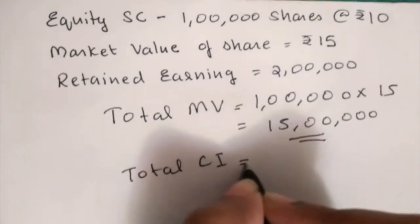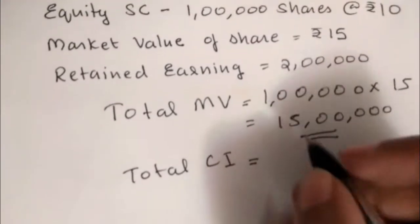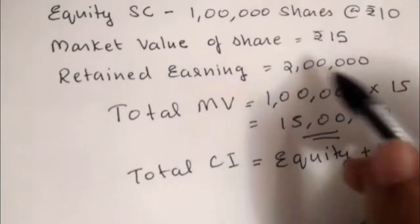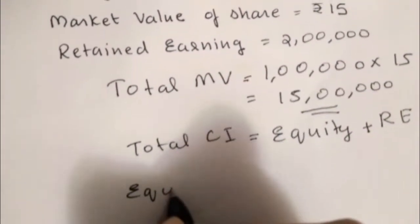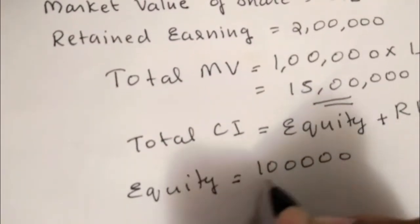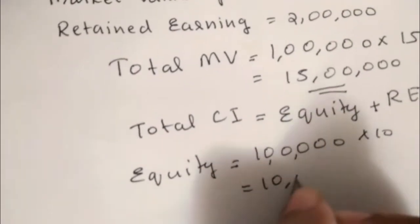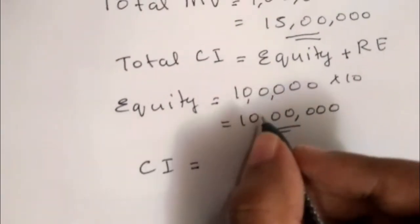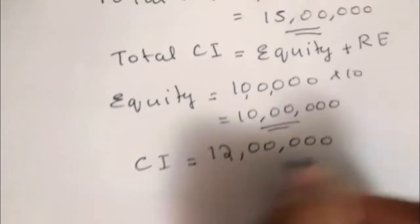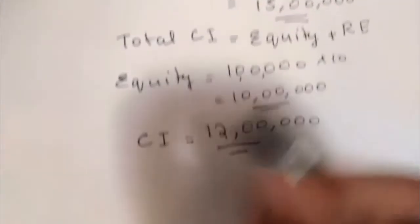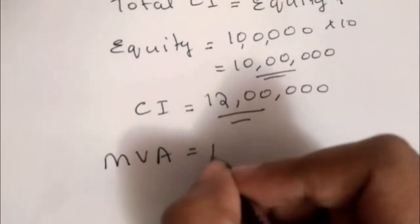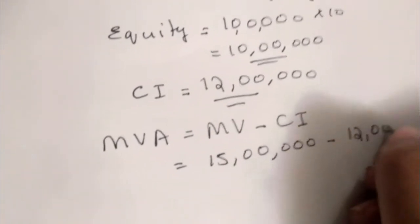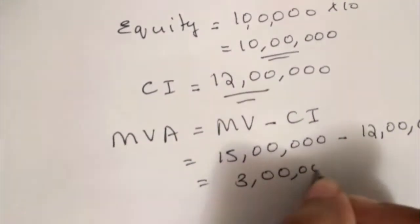Now we calculate the total capital invested. Capital invested equals equity share capital plus retained earnings. Retained earnings are given as ₹2 lakh. Equity share capital equals 1 lakh shares multiplied by ₹10, which gives ₹10 lakh. So total capital invested is ₹10 lakh plus ₹2 lakh equals ₹12 lakh. Market Value Added equals market value minus capital invested: ₹15 lakh minus ₹12 lakh equals ₹3 lakh.